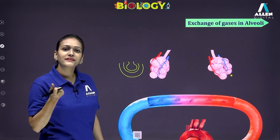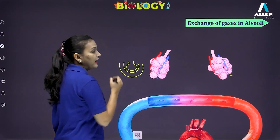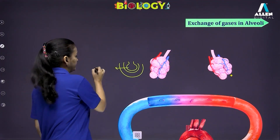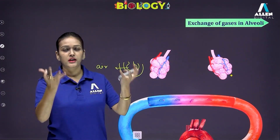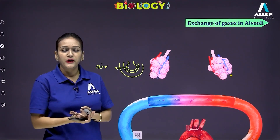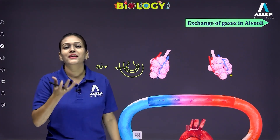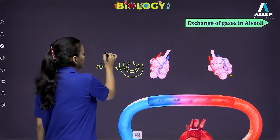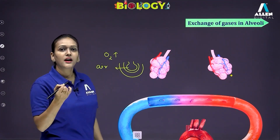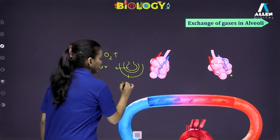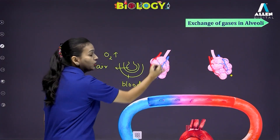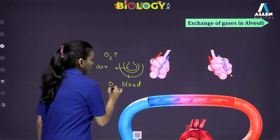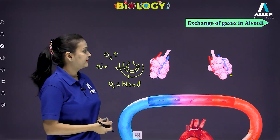The alveolar sac is small and thin with a cavity within known as the alveolar cavity. As we inhale, we take in air and the space within the alveoli — the alveolar cavity — is filled with that inhaled air. Inhaled air is rich in oxygen, having high oxygen content, while the blood running in the capillaries over these alveoli has poor quantity of oxygen — oxygen is low in the blood.